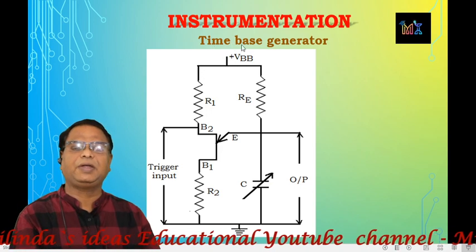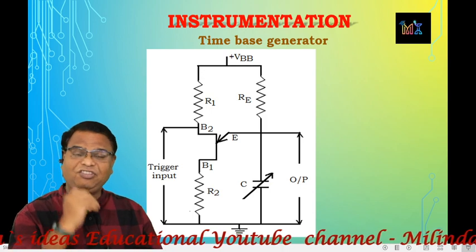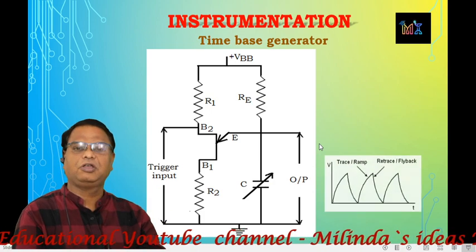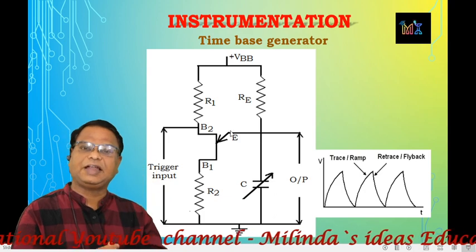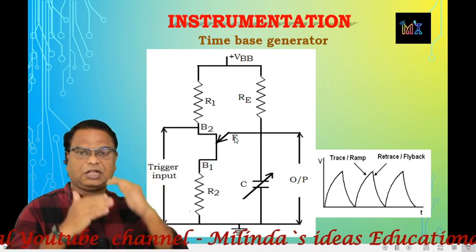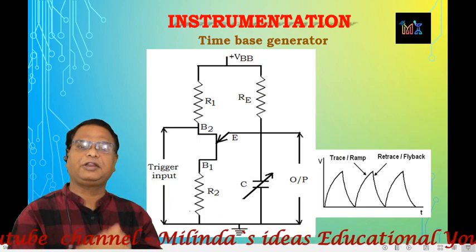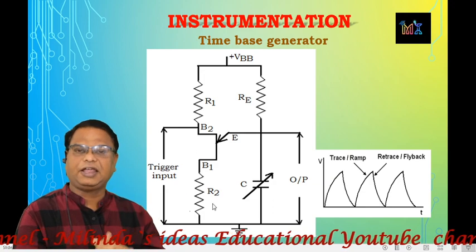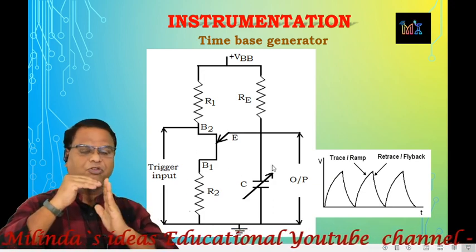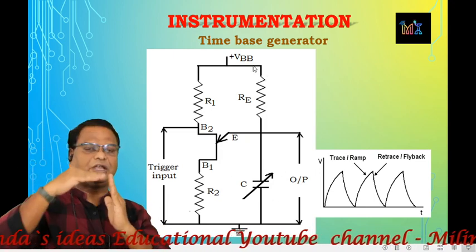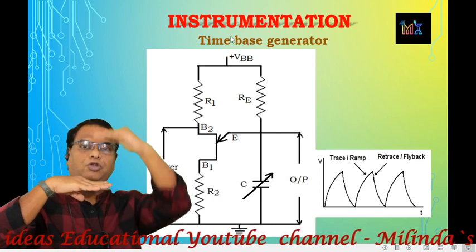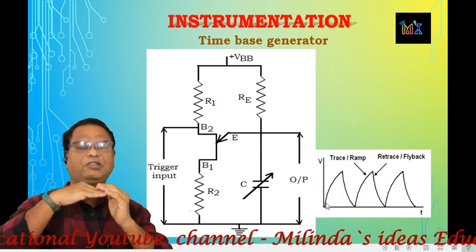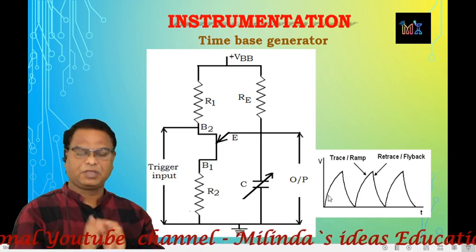When plus potential VBB — approximately 10 volts — is applied to the circuit, at the initial stage the capacitor remains in discharge mode, so the potential drop across the capacitor will be zero. This zero voltage is applied to the emitter circuit. As a result, conduction does not take place through the emitter circuit, so it remains open. The capacitor is then connected to VBB through resistor R2 and starts charging towards VBB.